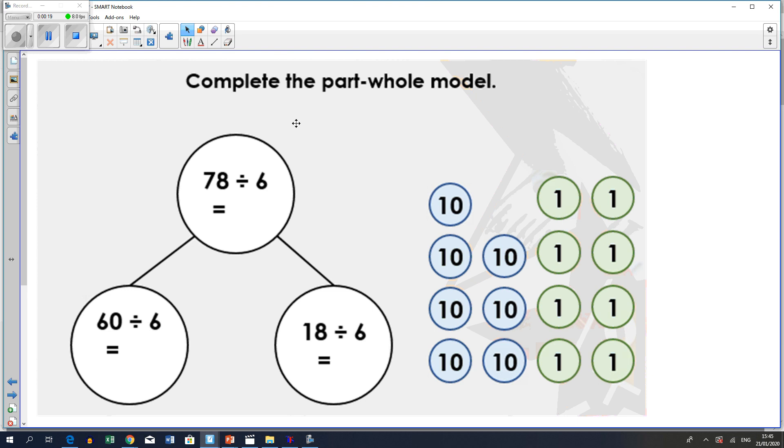Now, here's our two-digit number, which is 78, and we want to divide it by our single-digit, which is 6. Now, what you want to do to make it easier for yourself is you want to take out 6 in different lots.